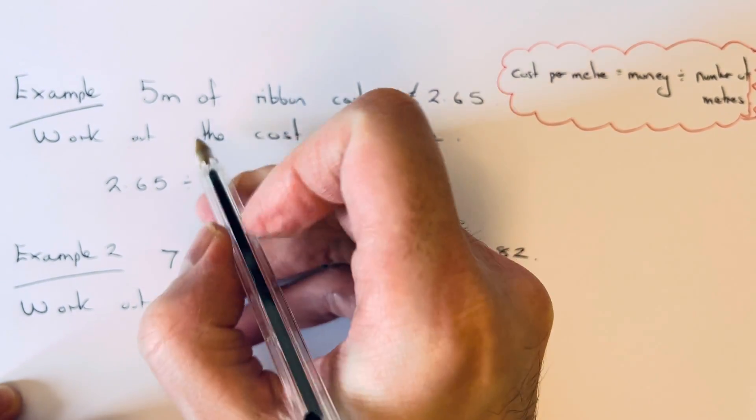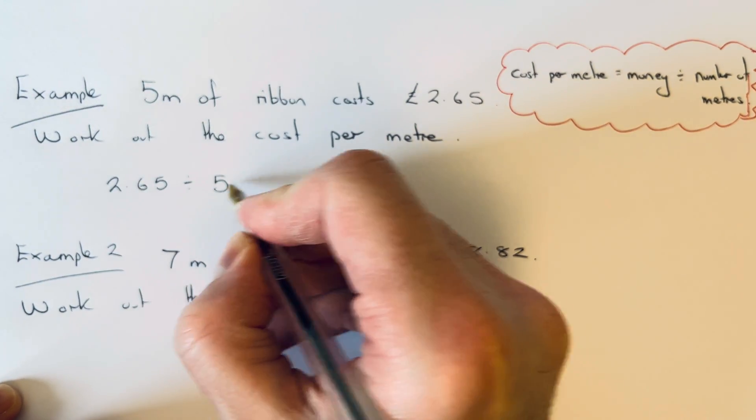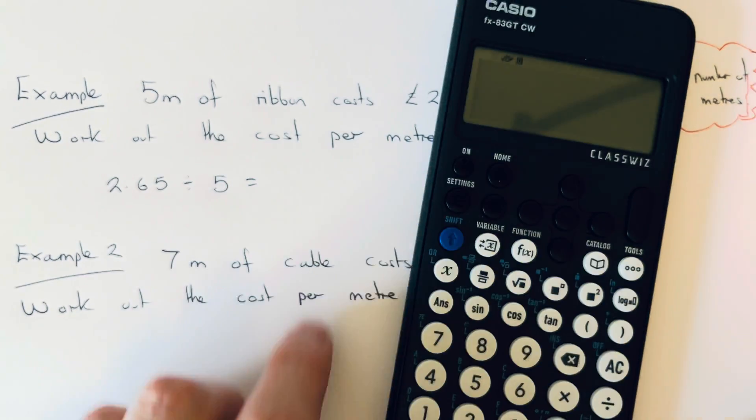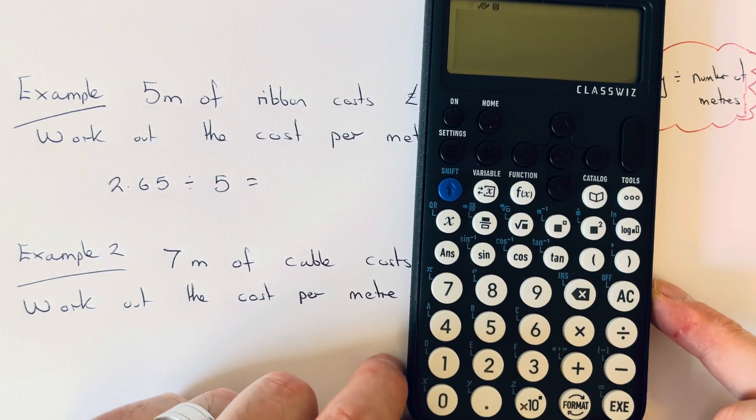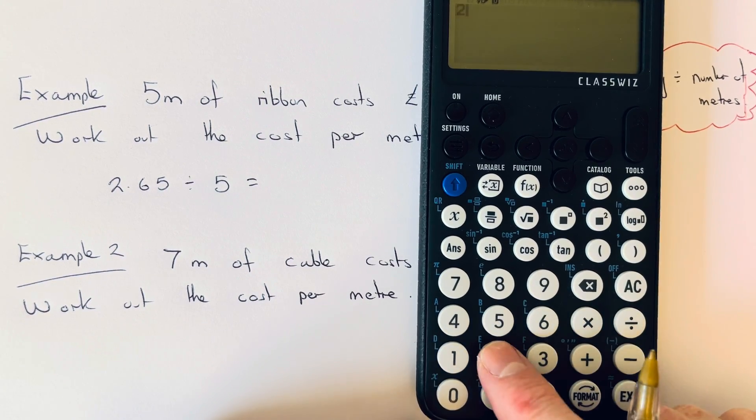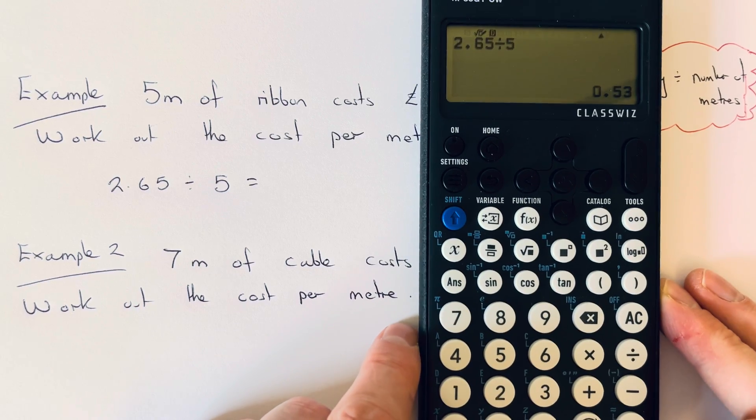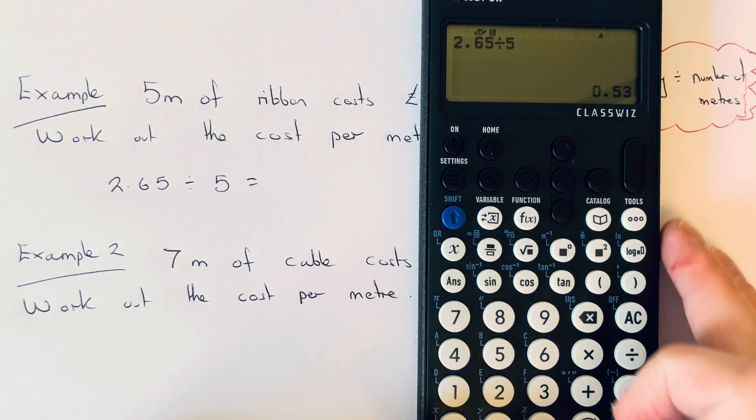divide it by how many meters we are buying, which is five. So if you get your calculator and work out £2.65 divided by 5, that gives an answer of 53p.